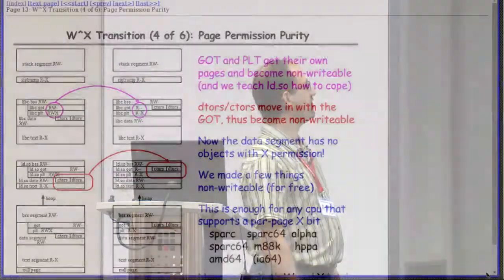Some of you may recognize this slide from Theo's presentation from several years ago, describing how the OpenBSD project moved various things — constructors and destructors were moved next to the GOT to make sure they were not executable or writable. Similar work was done with permissions on the GOT and PLT. So it's like, hey, we did all this great work — and oh, by the way, there's a gap. Oops.